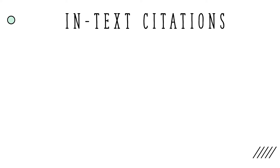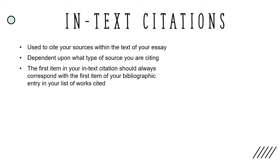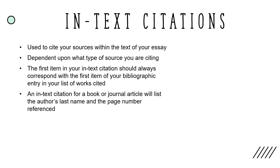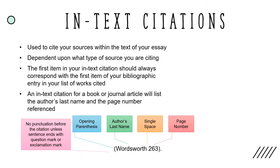In-text citations are used to cite your sources within the text of your essay and are dependent upon what type of source you are citing. The first item in your in-text citation should always correspond with the first item of your bibliographic entry in your list of Works Cited. Typically, an in-text citation for a book or journal article will list the author's last name and the page number referenced. There should be no punctuation before the citation unless the quoted sentence ends with a question mark or exclamation mark. Use an opening parenthesis followed by the author's last name, a single space, and the page number. End with a closing parenthesis and a period. If a source does not have a page number, do not add one to your in-text citation.